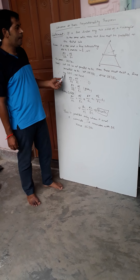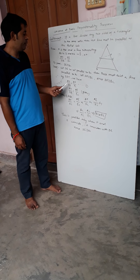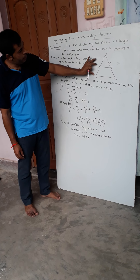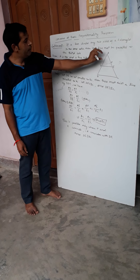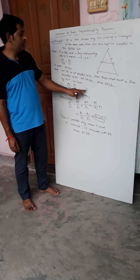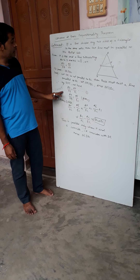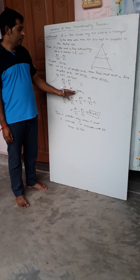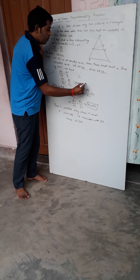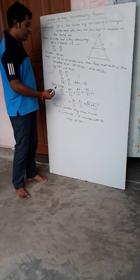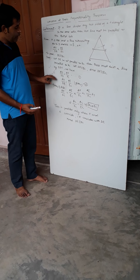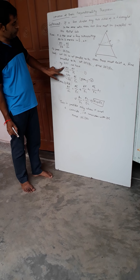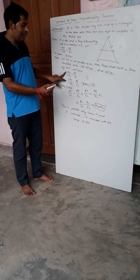So, by the Basic Proportionality Theorem (Thales' theorem), we have AD upon DB equals AF upon FC. Let this be equation 1. Now, it is given that AD upon DB equals AE upon EC. Let this be equation 2.